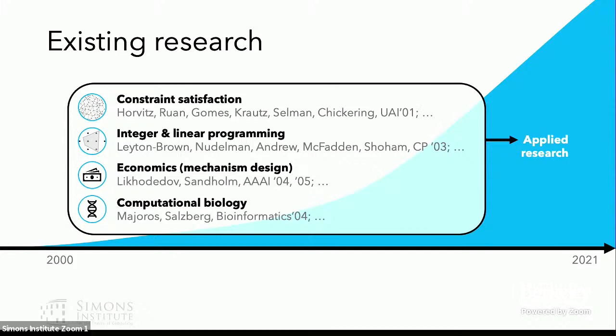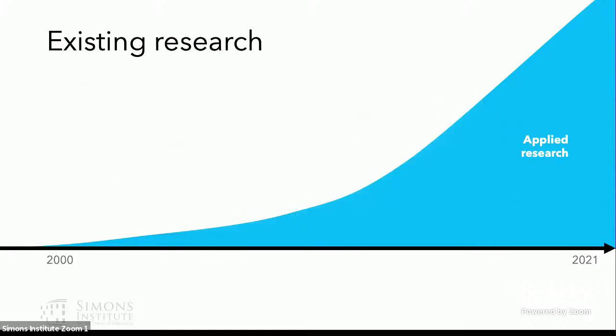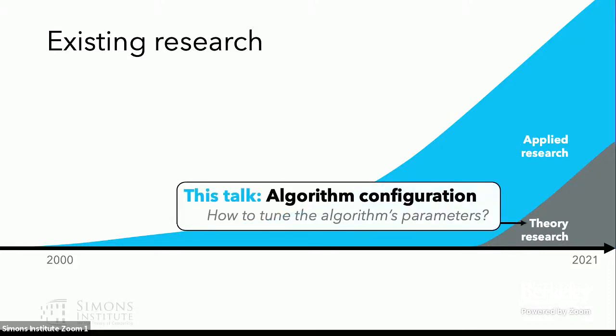However, almost all of this research over the past two decades has been purely applied. There's surprisingly little known about this topic from a theoretical perspective. But this started to change about five years ago. And there's really been a surge of interest in using machine learning and data in the context of algorithm design from a theoretical perspective. And in the last half of this talk, I'll tell you a little bit about theoretical progress on data-driven algorithm configuration. So how should I tune my algorithm's parameters for my particular application domain?